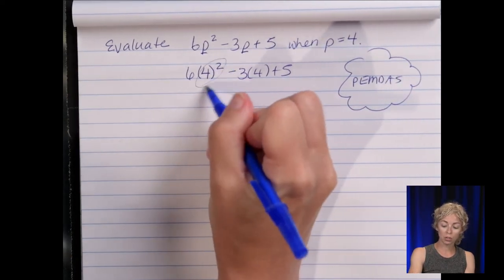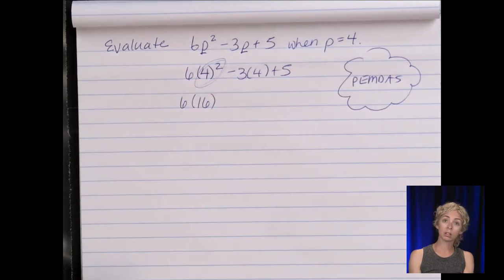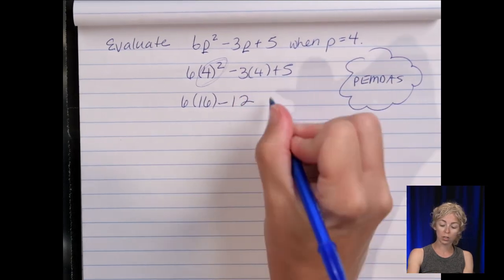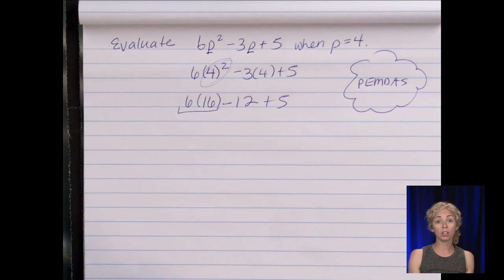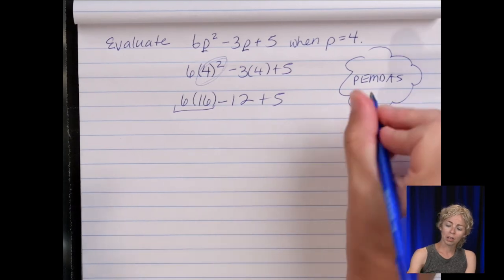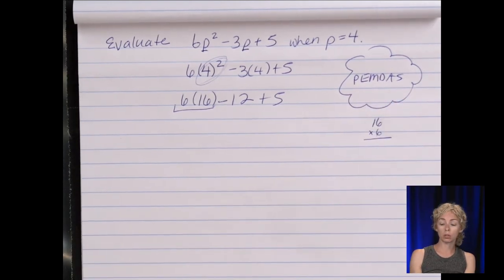Remember exponents come first. So this is six times sixteen minus three times four which is twelve plus five. Now six times sixteen, if you have a calculator you should all have a graphing calculator. If you don't see me, we can somehow get someone from the school to bring one to you. We can do it by hand. So off to the side sixteen times six way back to middle school. Six times six thirty-six carry the three. Six times one six seven eight nine so ninety-six.